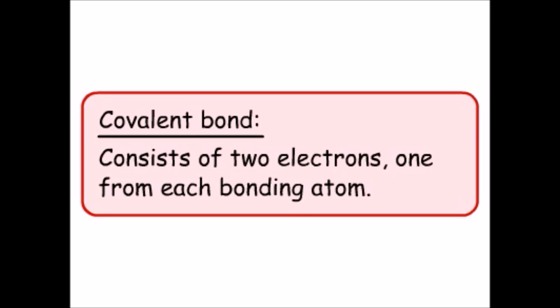We have seen that a covalent bond consists of two electrons, one from each bonding atom.